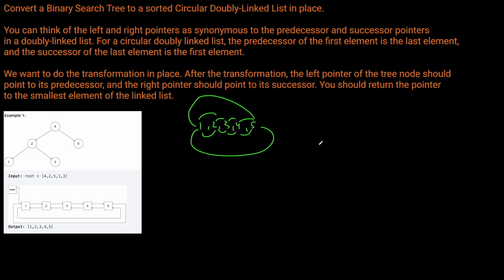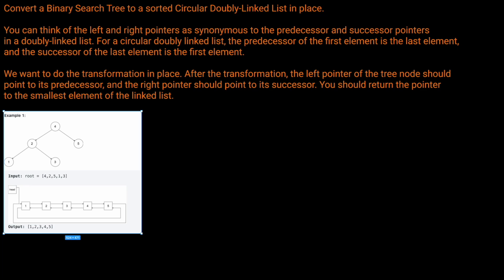But the problem does ask us to do it in place. So let's think about how we might do this — it's a little bit more complicated, although it is pretty intuitive. We know that an in-order traversal of a binary tree gives us the elements in sorted order, which also means that the path we're going to take through the tree is also going to be in sorted order.